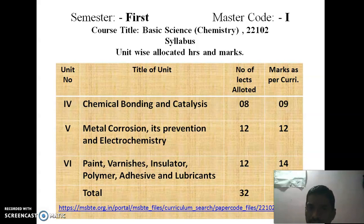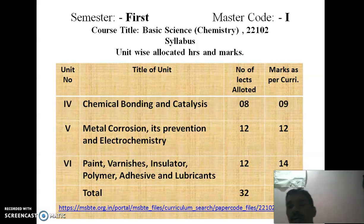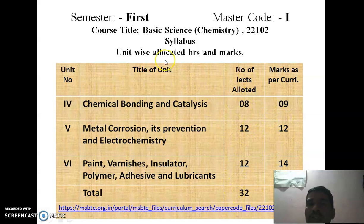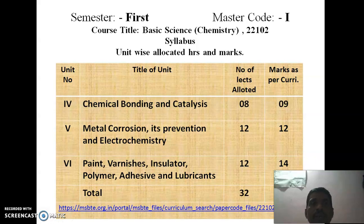Unit 4, Chemical Bonding and Catalysis, is allocated 8 hours and 9 marks. Unit 5, Metal Corrosion, its prevention and electrochemistry, provides 12 hours and 12 marks. Unit 6, Paint, Varnish, Insulator, Polymer, Adhesive, and Lubricant, provides 12 hours and 14 marks. The total is 32 hours and 35 marks for basic chemistry. The detailed syllabus is available on the MSBTE website, msbte.org.in.